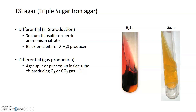When reporting a TSI slant, you have to take into account the K-A status — whether your slant and butt are red or yellow — as well as the ability to make hydrogen sulfide and the ability to make gas.